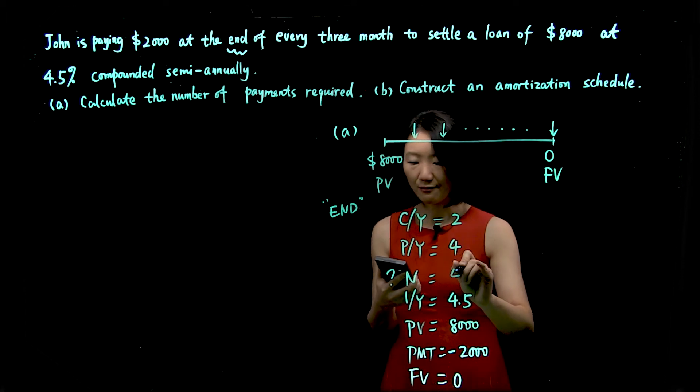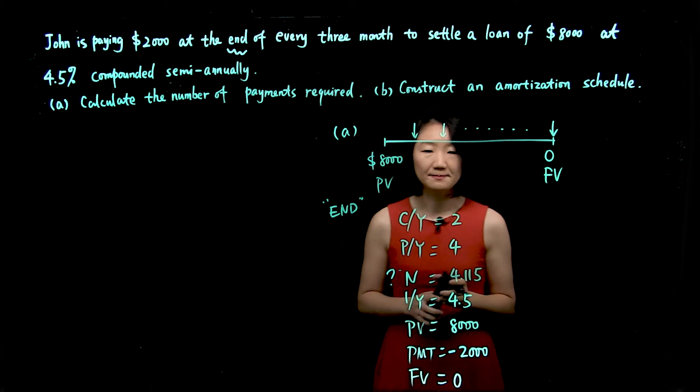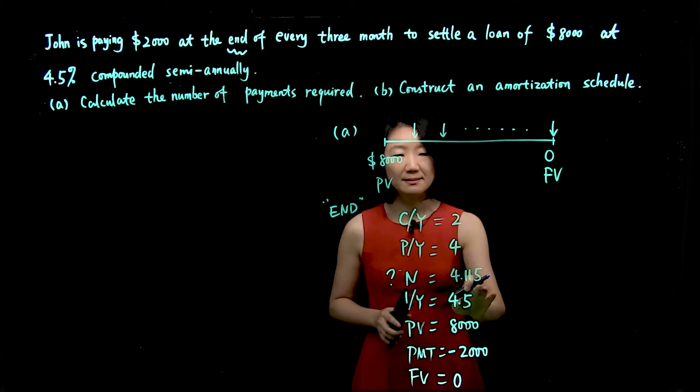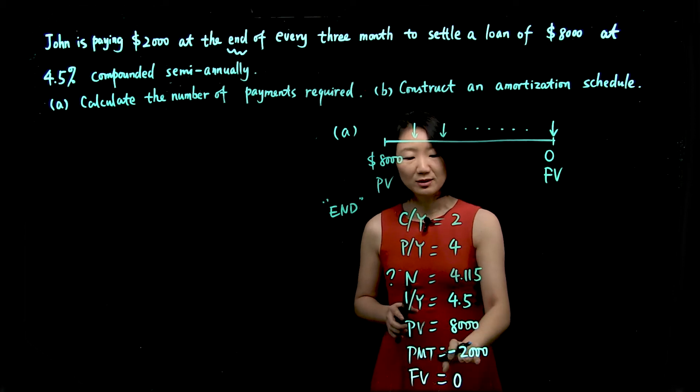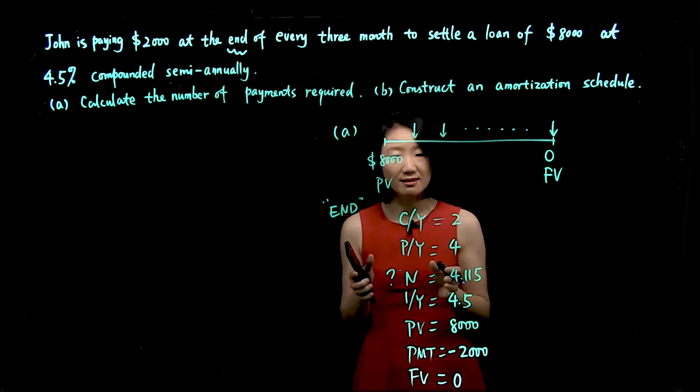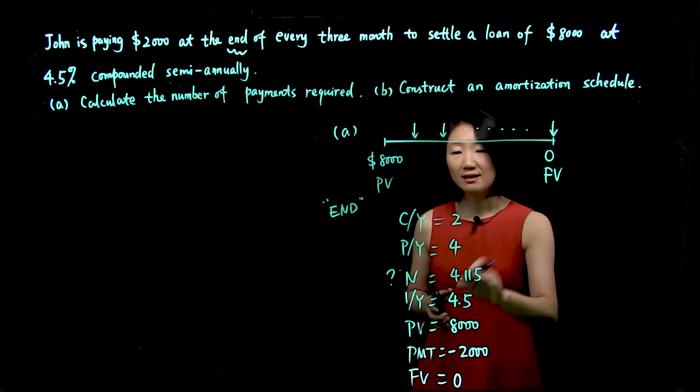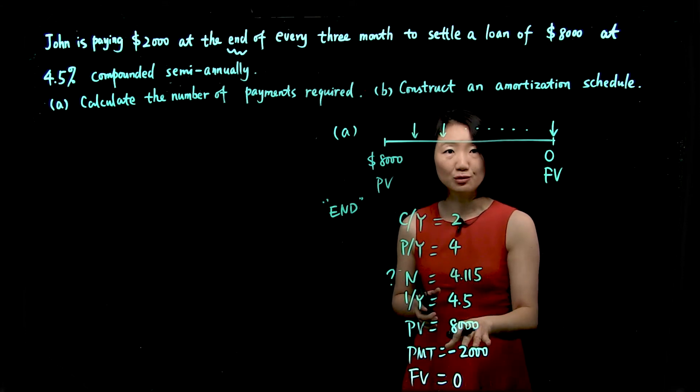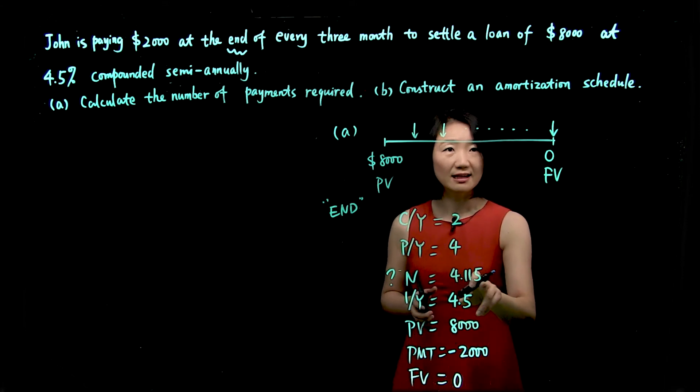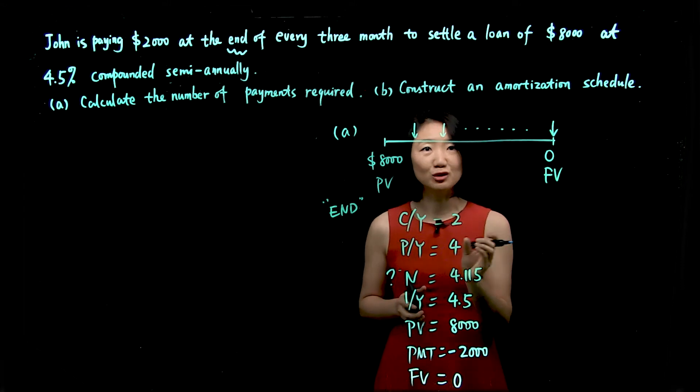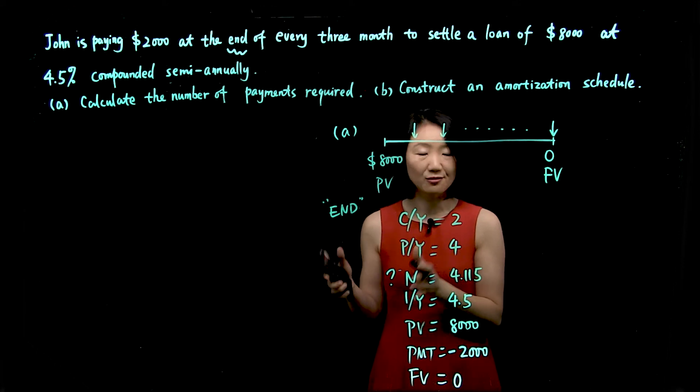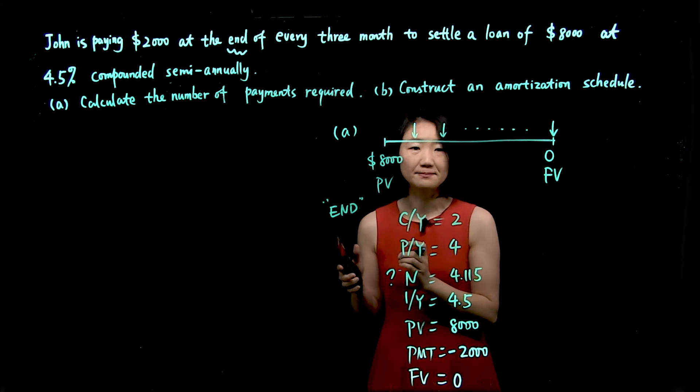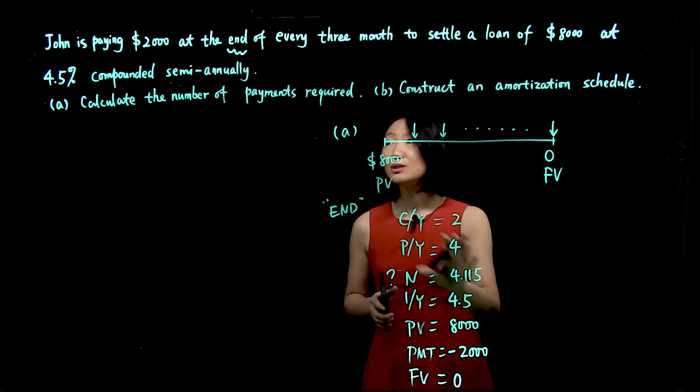I'll only keep three decimals here. And what does that mean? That means for a periodic payment, $2,000 every three months, John needs to make four full payments of $2,000, and then the last payment would be a partial payment. So he will make five payments, but only the first four payments are $2,000. Now we're done with question A.